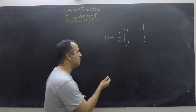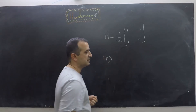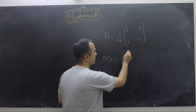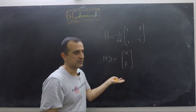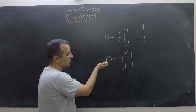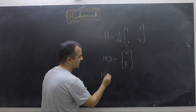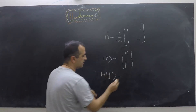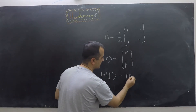We know that every qubit — let's say qubit |ψ⟩ — can be expressed as a vector (α, β), where α and β are complex numbers. So we can apply the Hadamard gate on this qubit by simply multiplying the Hadamard gate with |ψ⟩, and we get our transformed qubit |ψ̄⟩.